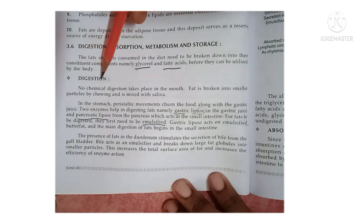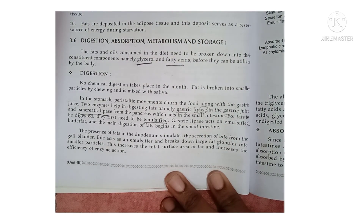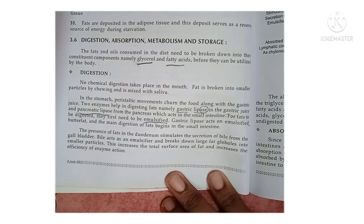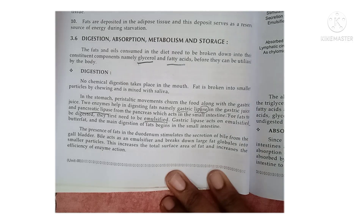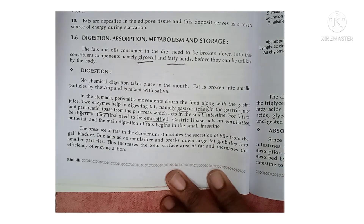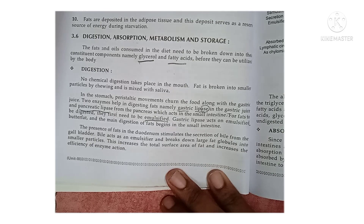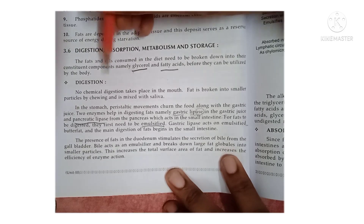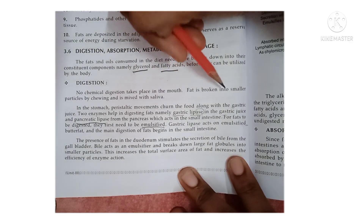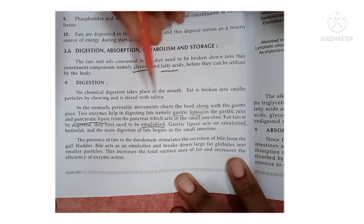First, let's talk about digestion. When you take fatty food, in the mouth there is no chemical digestion. The bigger fat molecules or food substances are broken down into smaller pieces by chewing and mixed with saliva. So in the mouth, fat is only mechanically broken down into smaller particles and mixed with saliva.